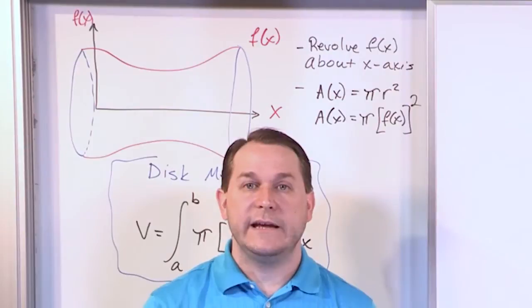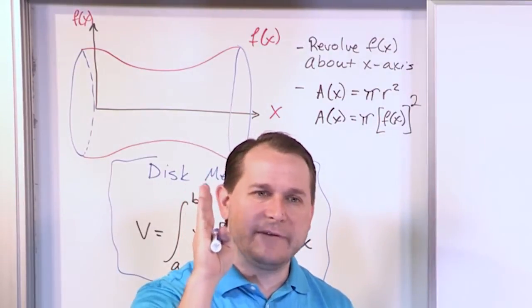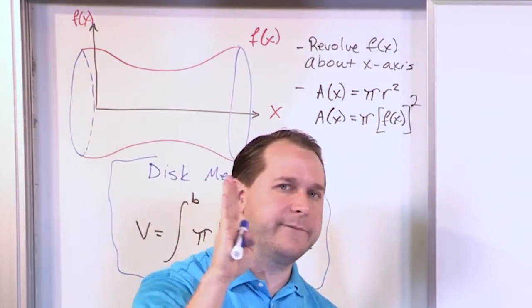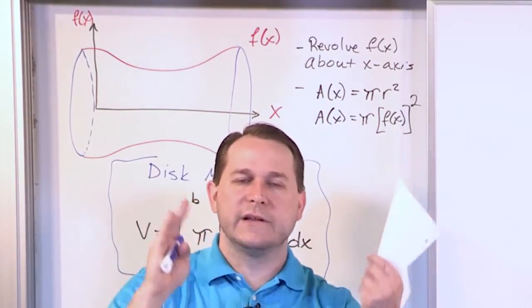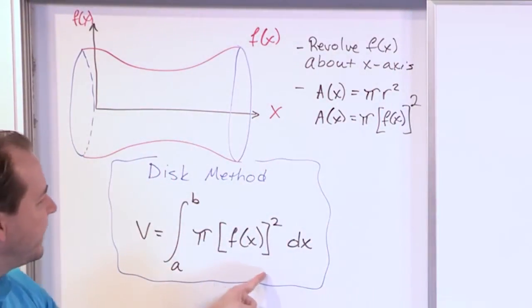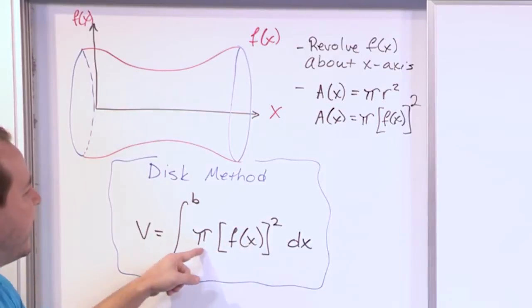We said in general to find the volume of an object, we need to have the cross sectional area as a function of x, and then we just integrate and add it up over the length of the object. That is what this is. This is the cross sectional area as a function of x.